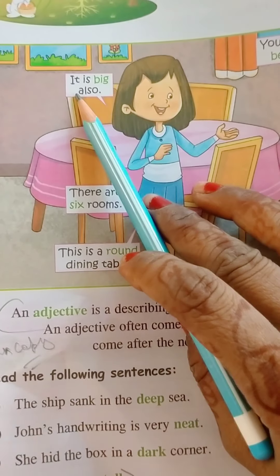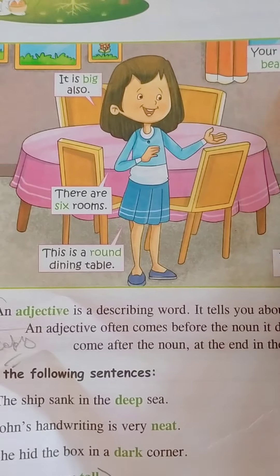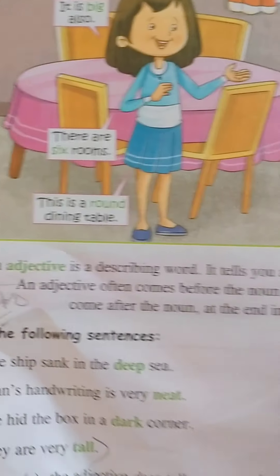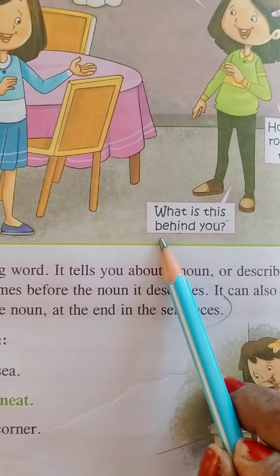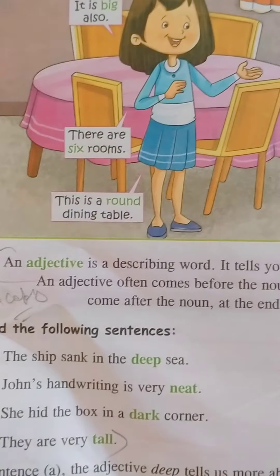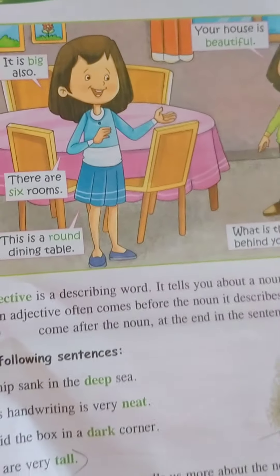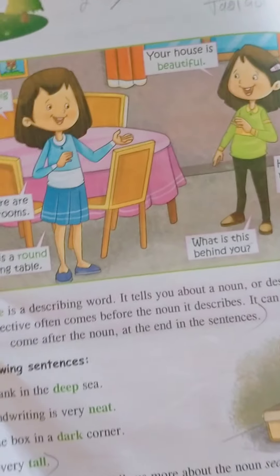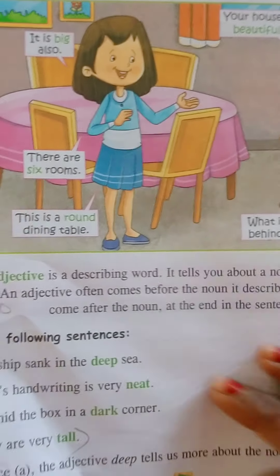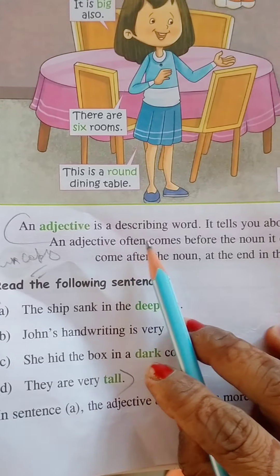Now, let's start. Your house is beautiful. How many rooms are there? There are six rooms. What is this behind you? This is a round dining table. We describe karthay hai — yeh vishishan shabd, jho sanghya ya sarna noun or pronoun ki vishishata batathe hai. An adjective is a describing word.